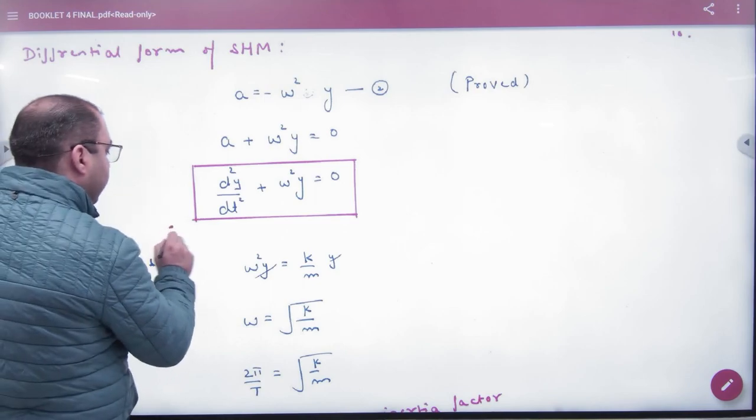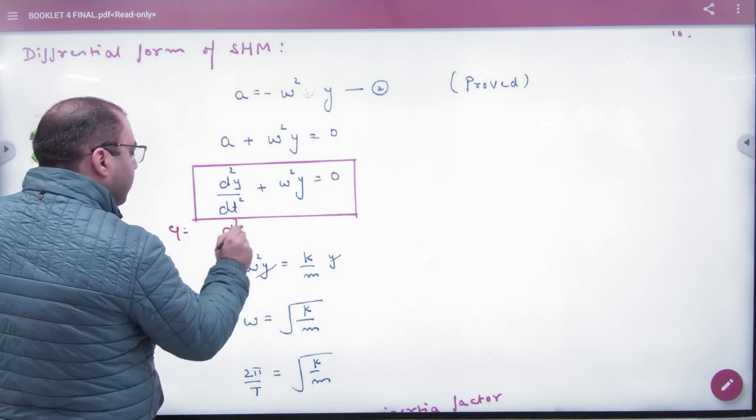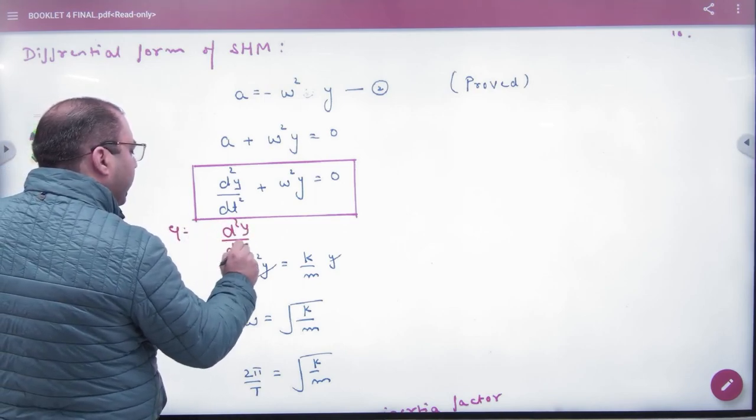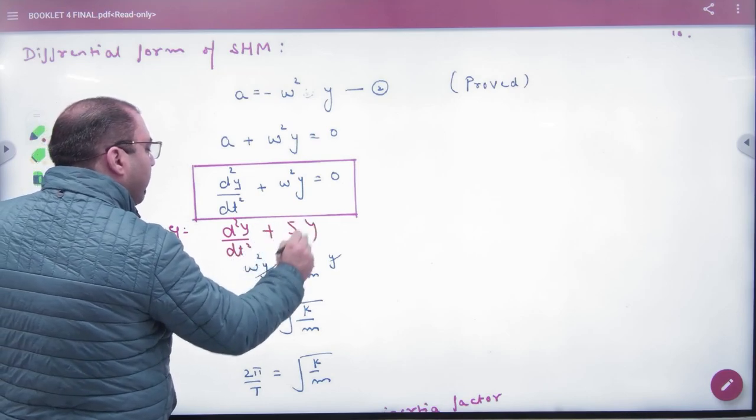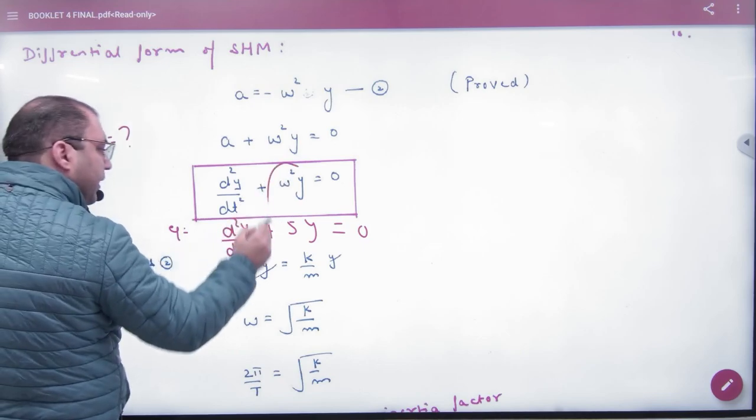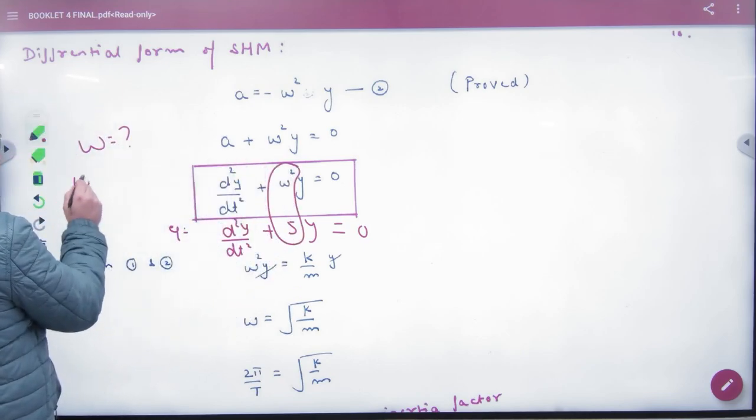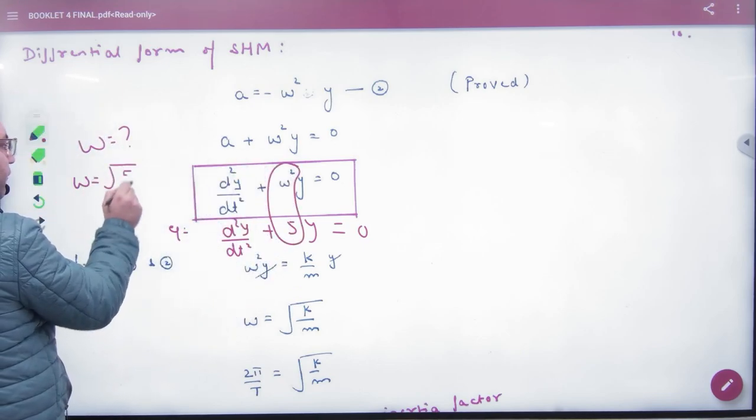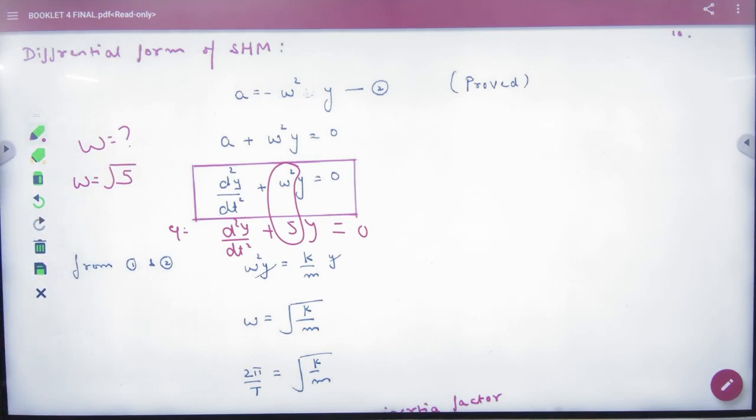You will see in the exam an equation like d²y/dt² + 5y = 0, and you need to find omega. Compare it with the standard form. What value is under the root? 5. That's the answer. This equation will be given, so compare it.